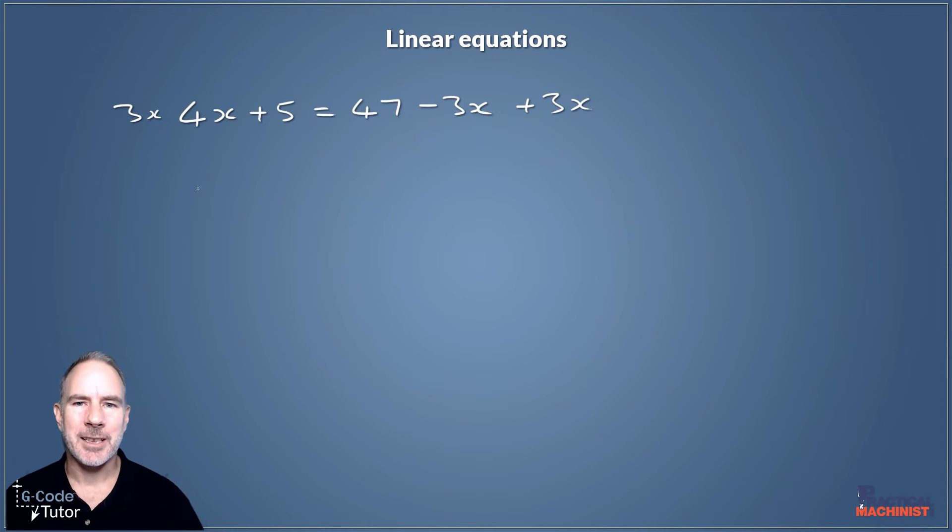That removes our minus 3x on the right hand side. So let's rewrite our equation to see what we have now. On the left hand side of the equation, we now have 3x plus 4x plus 5 and that we know is equal to 47. Now we can start doing some of those maths to make this look a little bit cleaner. We have 3x plus 4x, well we can call that 7x. So on the left hand side, we now have 7x plus 5 and we know that equals 47.